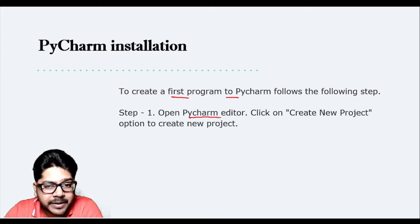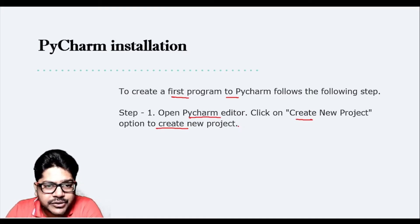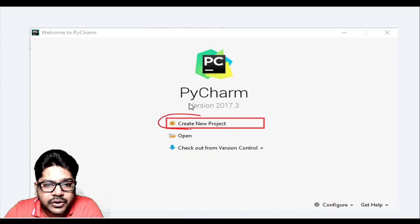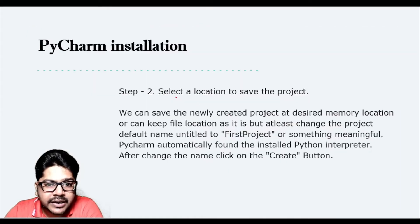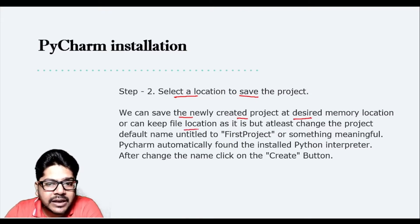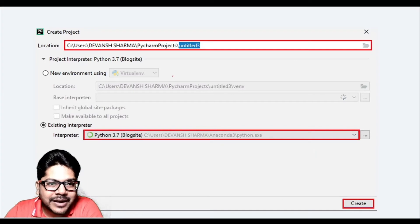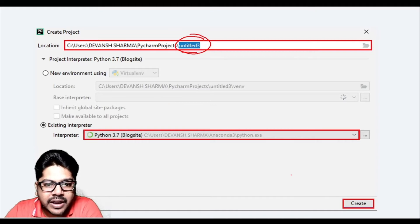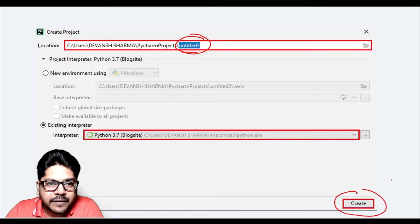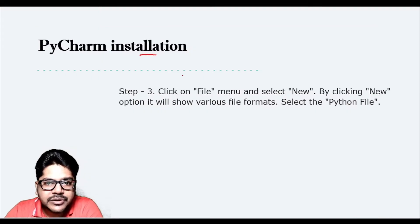To create your first program in PyCharm, open the editor and click 'New Project' to create a new project, or directly click 'New'. It will ask you to name the project and select a save location. Change the default name from 'untitled' to something meaningful like 'first project', then click the Create button.